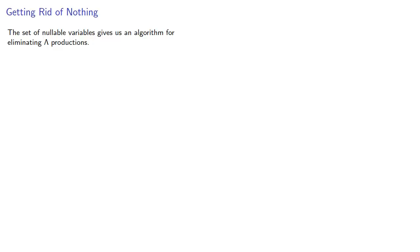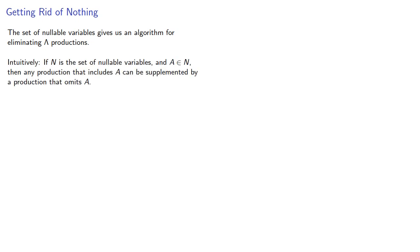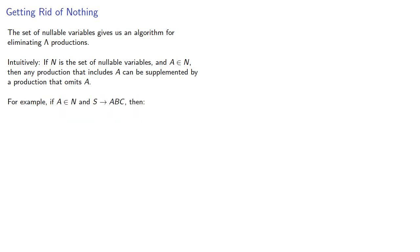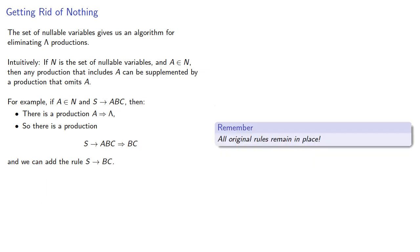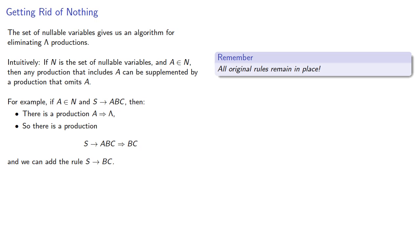The set of nullable variables gives us an algorithm for eliminating the lambda productions. Intuitively, if N is the set of nullable variables and A is in N, then any production that includes A can be supplemented by a production that omits A. For example, if A is in N and S produces ABC, then since A derives lambda, we can get just BC, and so we add the rule S produces BC. Importantly, all the original rules have to remain in place.